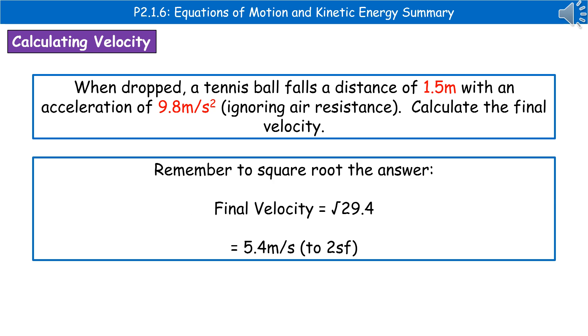The last thing we've got to do is remember that we had the final velocity being squared to give us that value. Therefore, to actually get the final velocity, we need to take the square root of 29.4, and that gives us our final answer of 5.4 metres per second to two significant figures.